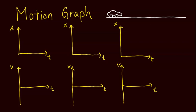In this video we're going to learn what motion graphs look like for an object moving at constant speed. Constant speed means it's going the same amount of distance every second. Constant velocity means not only is it going the same distance every second, it's also going in the same direction the whole time — meaning it's going in a straight line.